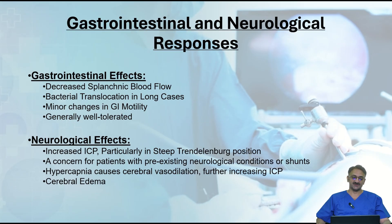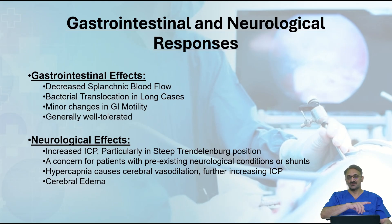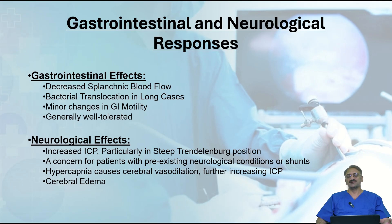The gastrointestinal responses include decreased splanchnic blood flow due to mechanical compression. If prolonged, this may lead to bacterial translocation, especially in longer cases. Increasing pressure from 12 to 18 mmHg makes this compression more significant with greater risk of bacterial translocation. For this reason, the gut should be sprinkled with warm normal saline every 30 to 60 minutes to keep it warm and prevent dryness, which can also contribute to bacterial translocation. These effects may lead to minor changes in gastrointestinal motility postoperatively, though generally well tolerated.